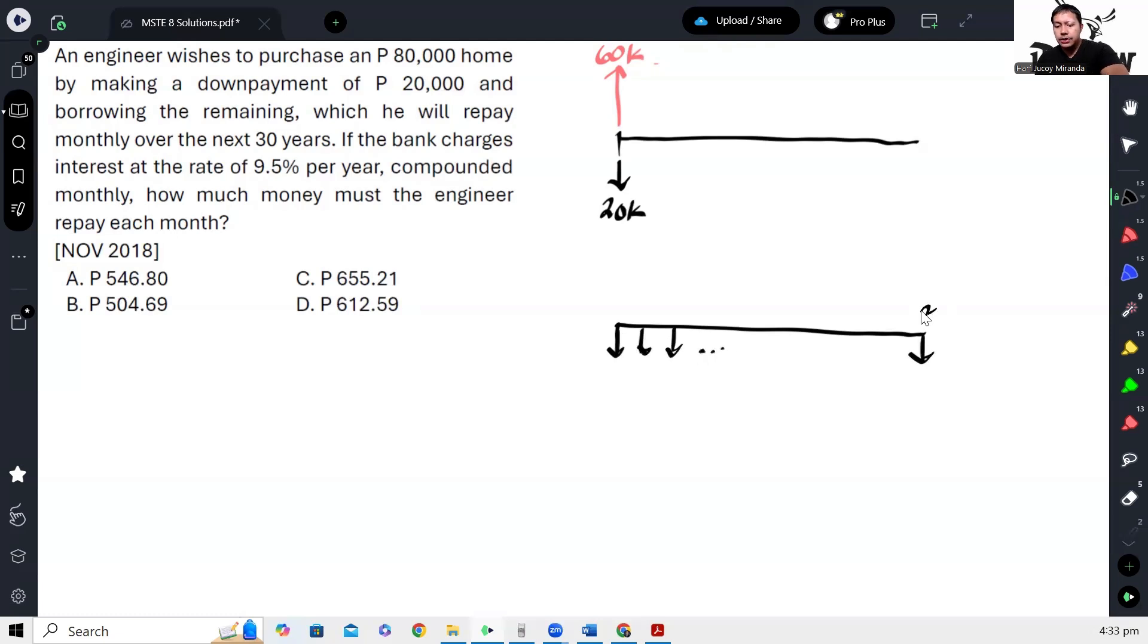Hanggang 30 years. Hanggang sa makompleto niya yan, yung P60,000 na yan. So ibig sabihin, an annuity, ito, tawagin na ito A. So yun yung amortization natin. Ang idea lang, kailangan yung total dito na annuity, F, ay equal din sa future worth ng 60K.